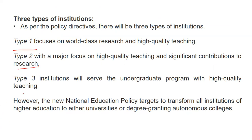There are three types of institutions under NEP 2020. Type 1 focuses on world-class research and high-quality teaching. Type 2 focuses on high-quality teaching with significant contributions to research. Type 3 serves undergraduate programs with high-quality teaching. The New National Education Policy targets transforming all institutions of higher education into either universities or degree-granting autonomous colleges.